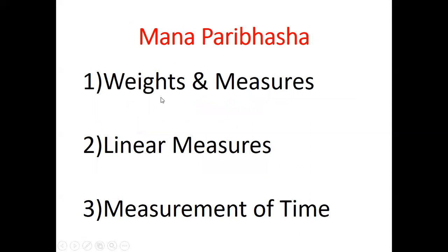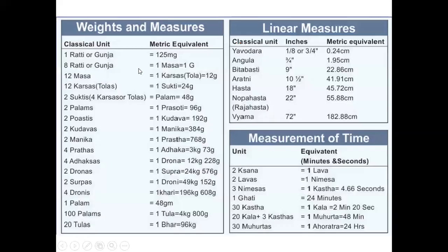We will talk about weights and measures, linear measures, and also the measurement of time. Weights and measures: classical units mentioned in the Samhita Granthas and their metric equivalents. I am not going to read all these things — this is very clear in front of you — but important things I will highlight. Gunja is always mentioned even in today's books and equals 125 milligrams. For example, a tablet dose of 1 Gunja is taken 3 times a day, meaning 125 milligrams three times a day. Then 8 Rathi or 8 Gunja becomes 1 Mash, and 1 Mash is 1 gram in today's context.